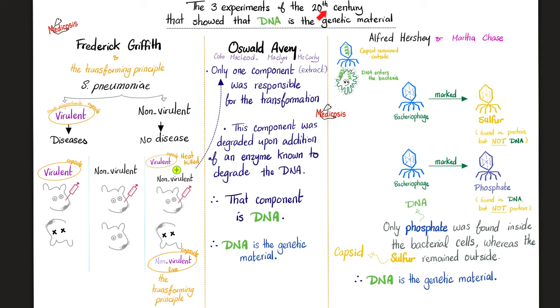Three experiments were done in the 20th century that showed that DNA is the genetic material. Let's go. Number one: Friedrich Griffith and the transforming principle.